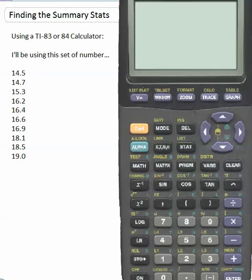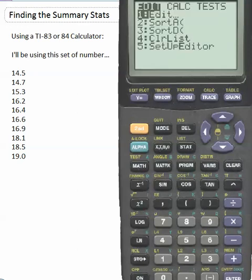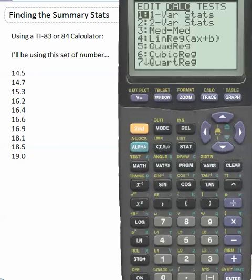Or you could have just hit stat because now I'm going to hit stat, arrow right over to calculate, and then I'm going to choose 1 or just hit enter because I'm already selecting 1 right there.